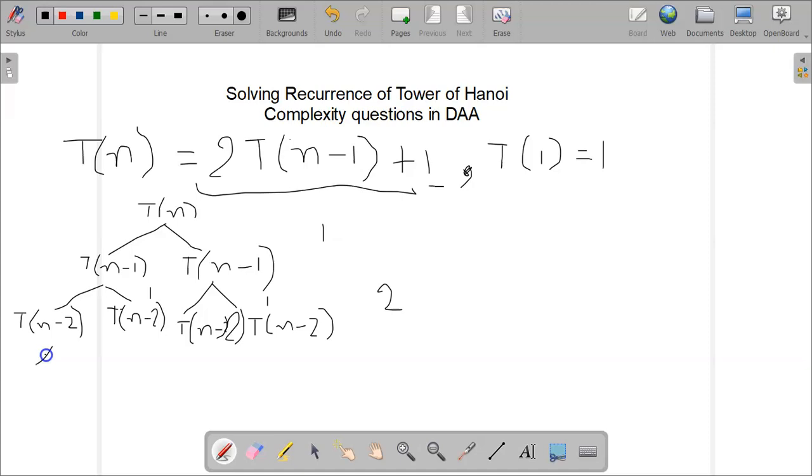Similarly, we will again break this into another level, and this time this will be T(n-3) at all 4 of the nodes, and we will have an effort of 1, 1, 1, and 1, which is 4. Next time when we break it we will have an effort of 8.